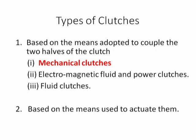We can give the types as: mechanical clutches, electromagnetic and fluid clutches. As a second category, based on the means used to actuate them — how clutches are actuated — depending upon the type of application, the load may be axial or radial. In the axial direction, we have single plate or multi-plate clutches. In the radial direction, if the load is applied, we can have a centrifugal clutch.